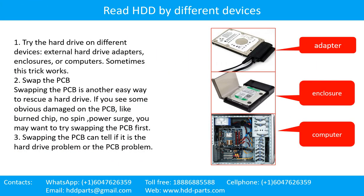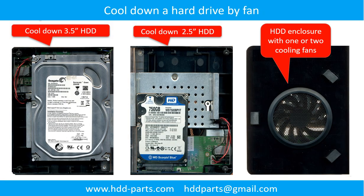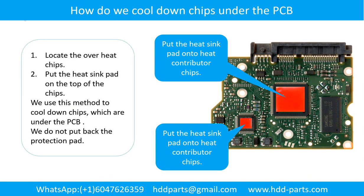There are some simple ways to recover data from a hard drive. One method is to try reading the hard drive with different devices — like different external hard drive adapters, computers, or enclosures — because different devices use different methods to read a hard drive, and sometimes this trick works. Another way is swapping the PCB board, which can fix problems caused by the PCB board and is much cheaper than sending the hard drive to a data recovery firm. These pictures show how to use a fan to cool down the hard drive and how to cool down overheated chips under the PCB board.